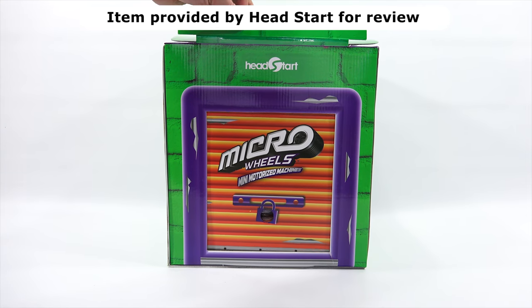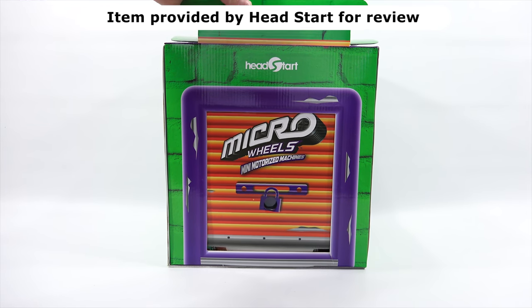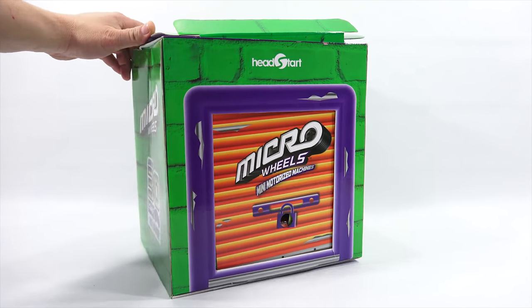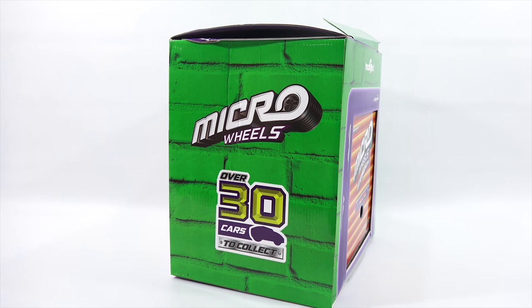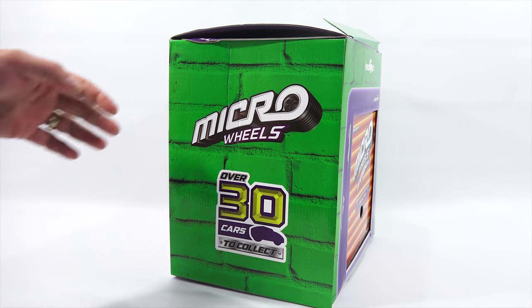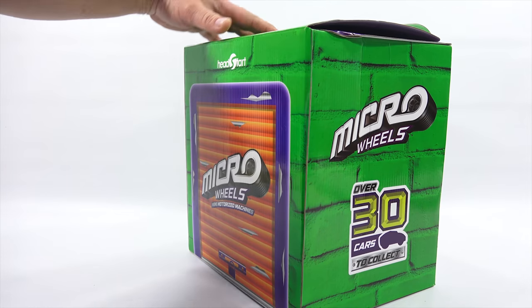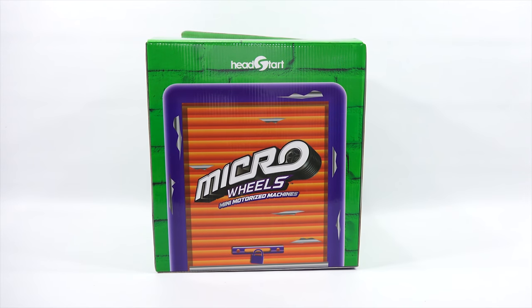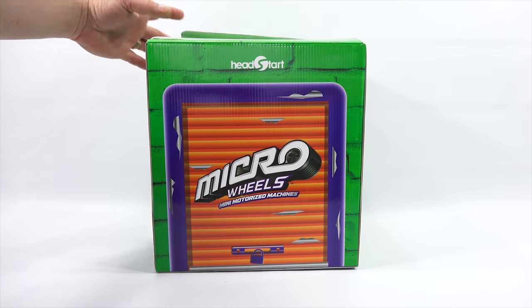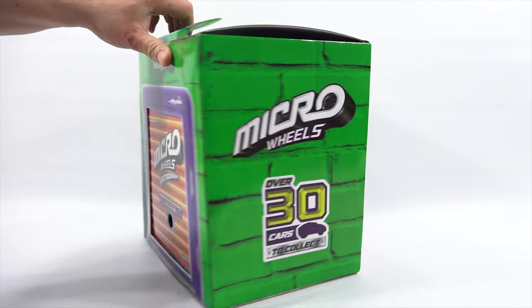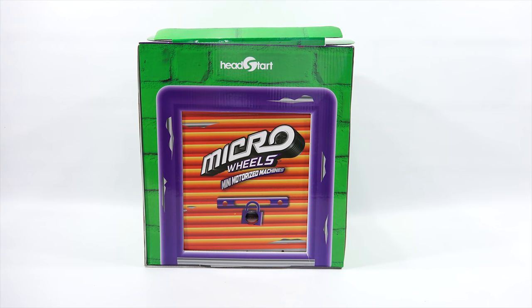Now this is a garage door, which I will lift up in just a second. And then I will show you the other side of the box. It says over 30 cars to collect. Looks like it's bricks on that side. And then it's a repeat of the garage door there, but this side does not open. So here we go. Let us open the garage door. Press the garage door button.